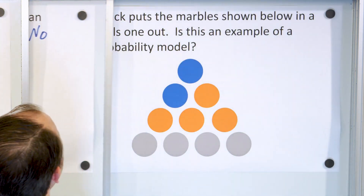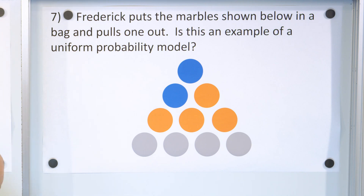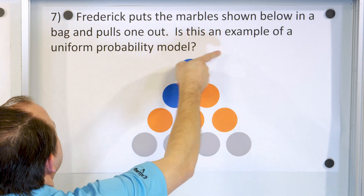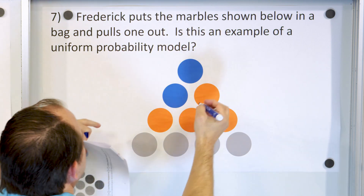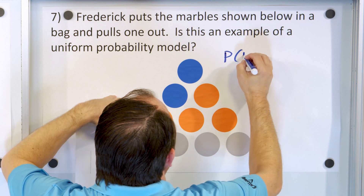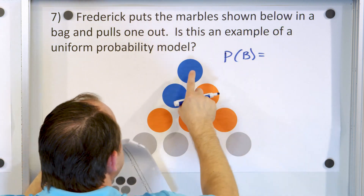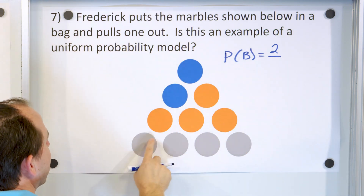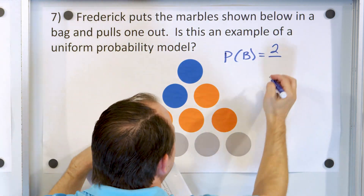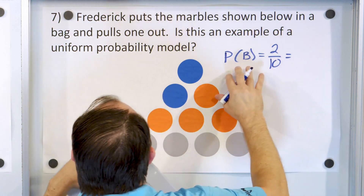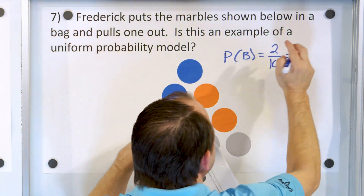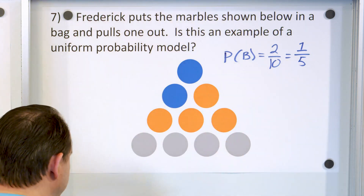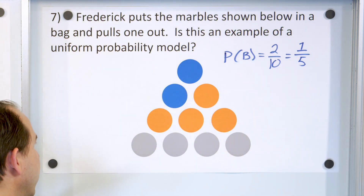Problem number seven. Frederick pulls the marbles shown below, puts them in a bag, and pulls one out. Is this an example of a uniform probability model? The probability of pulling out a blue marble is two possible outcomes out of ten marbles total — two-tenths, which simplifies to one-fifth. The probability of pulling out an orange marble is four out of ten, which simplifies to two-fifths.